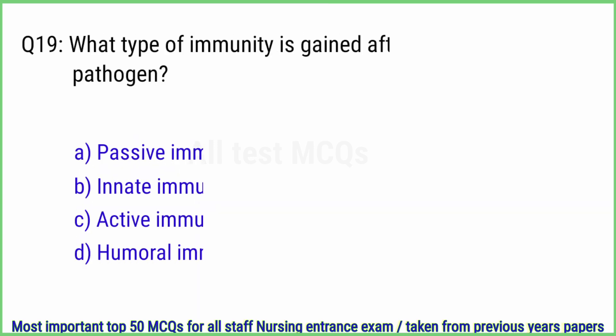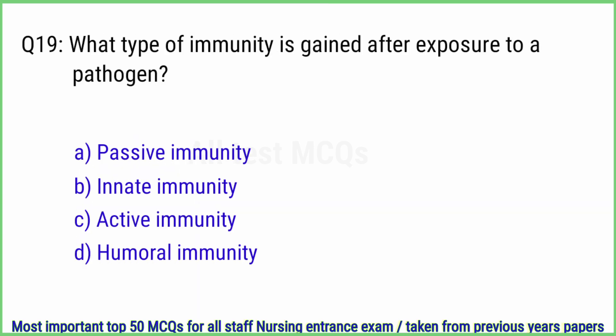Q19. What type of immunity is gained after exposure to a pathogen? The right answer is option C, active immunity.